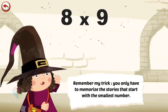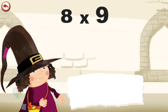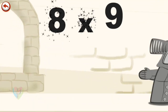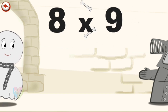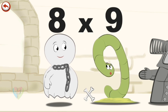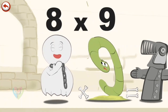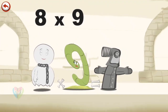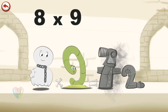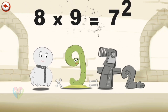Remember my trick: you only have to memorise the stories that start with the smallest number. What's the story of 8 times 9? Spooky 8 sees Slimey 9 and rushes to give him a fright. Slimey 9 jumps and bumps into a set of armour in the shape of a 7, which loses an arm in the shape of a 2. 8 times 9 is 72.